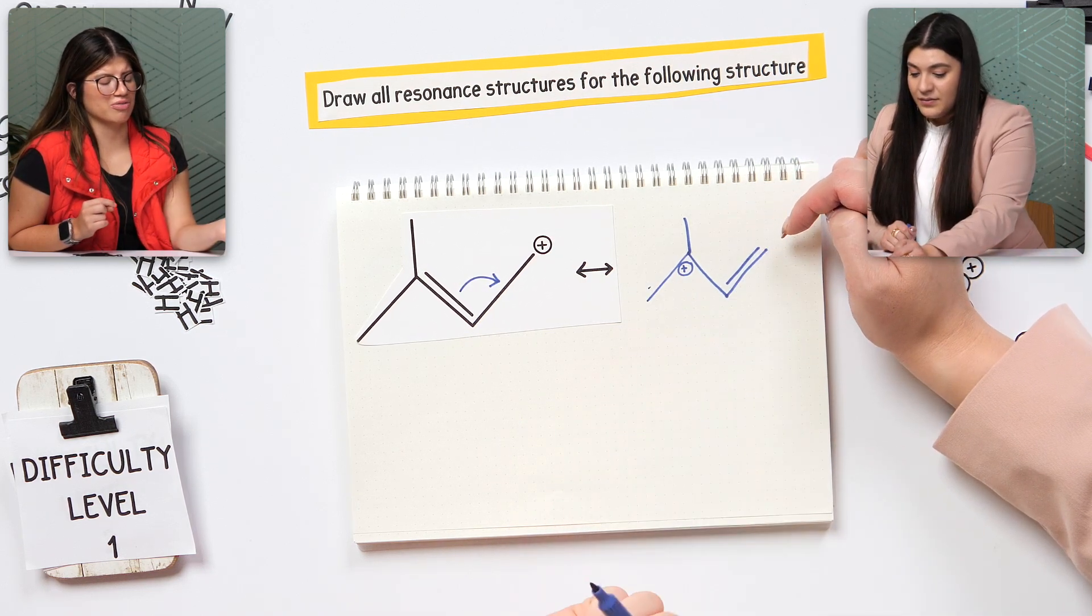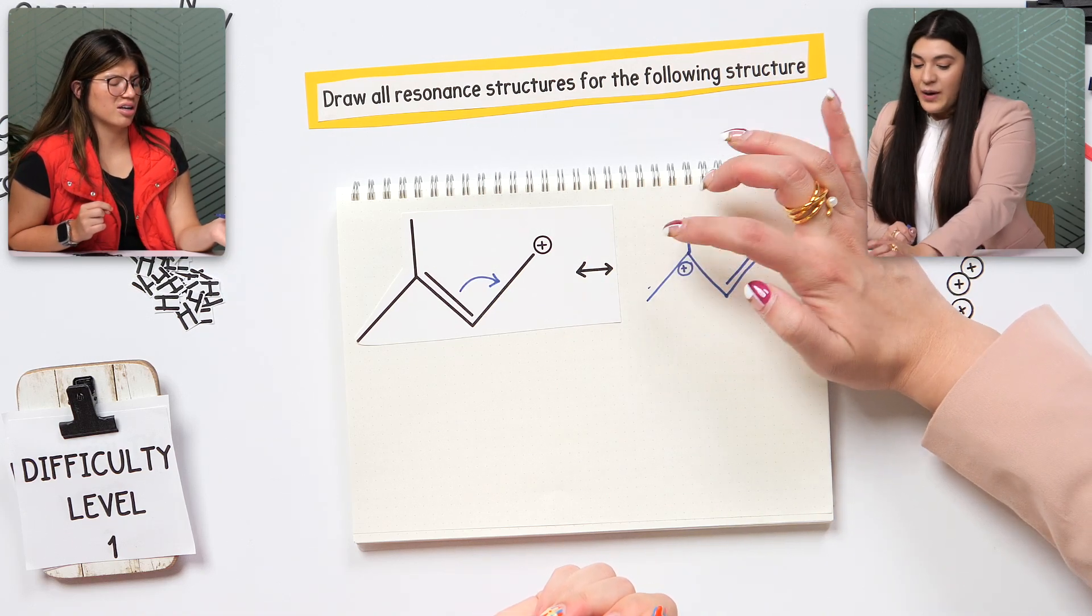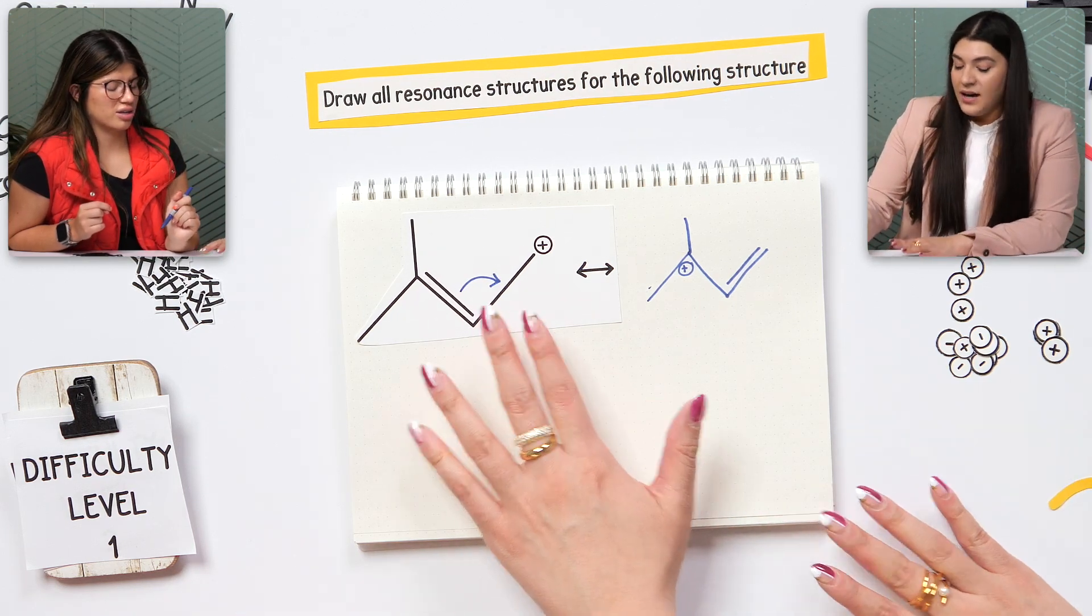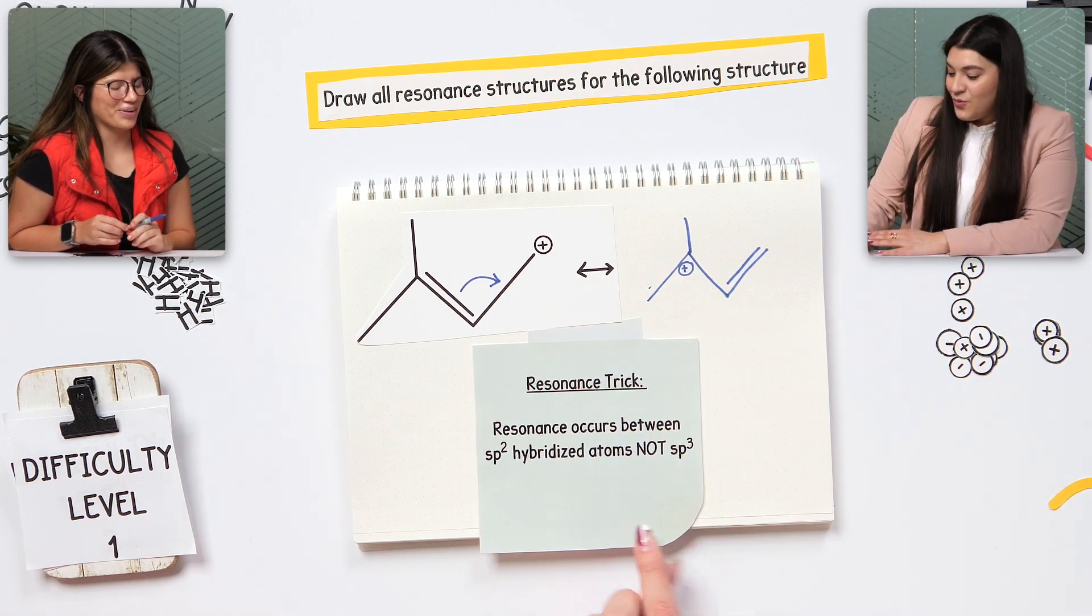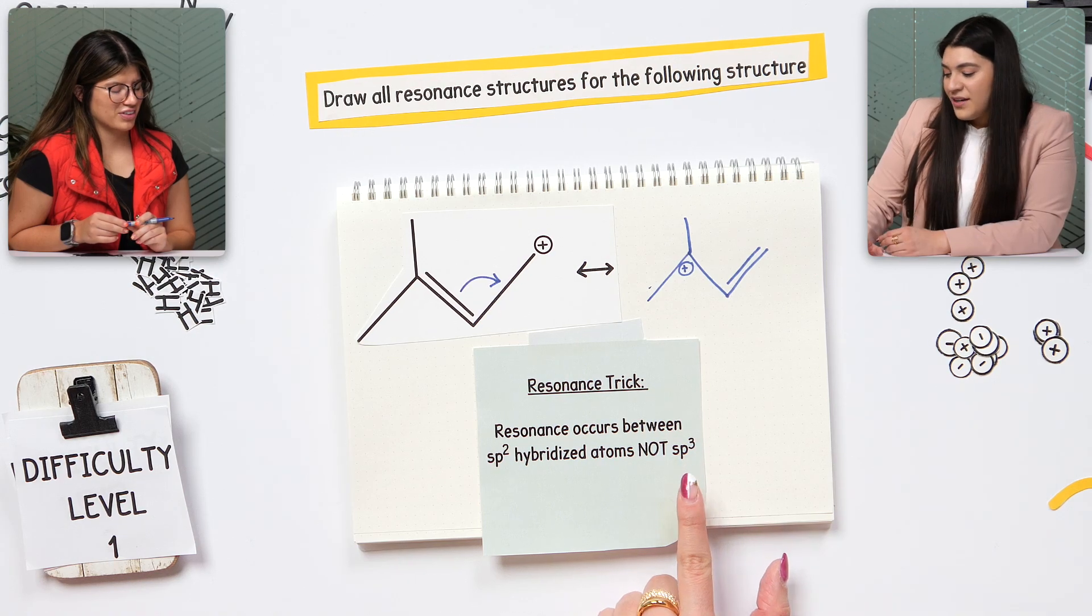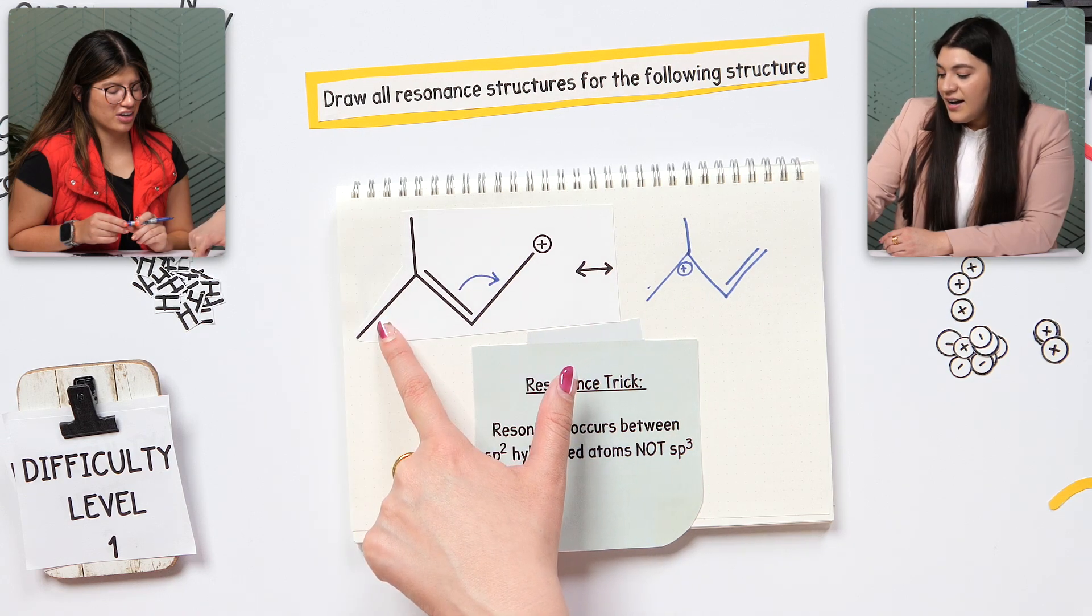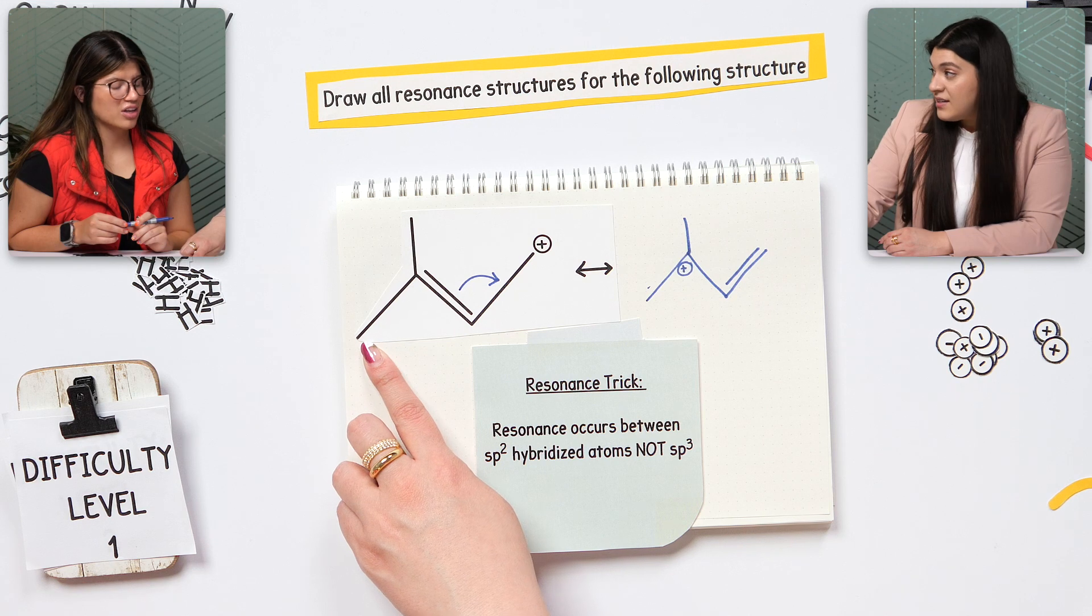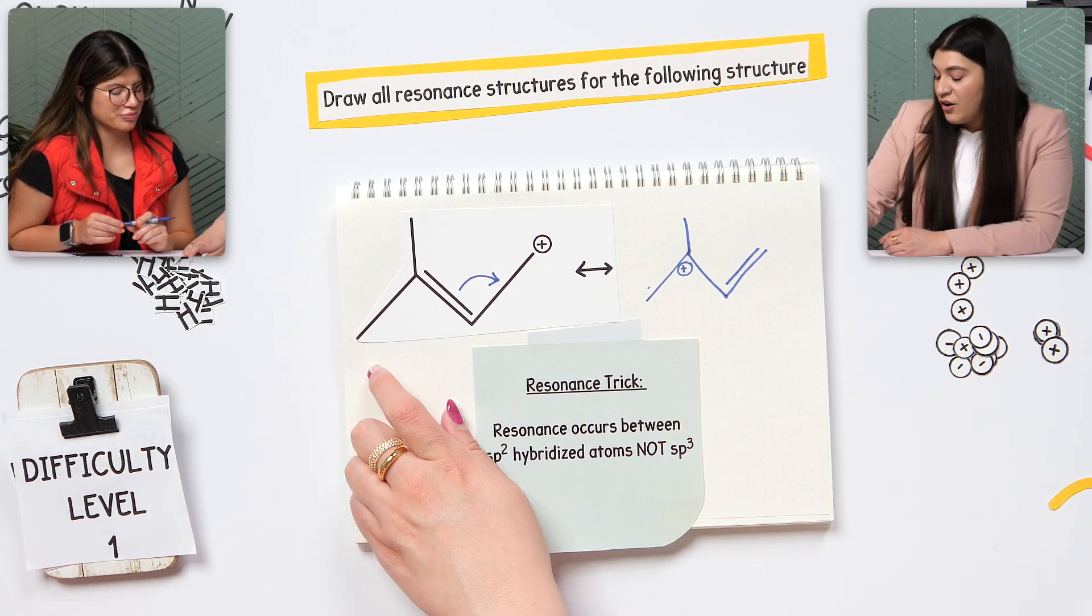But then that would just change the positive back. So the reason why we can't move this to here goes back to the possibilities of resonance. Actually, a resonance trick. We do not involve sp3 hybridized atoms, or think of it as just a single bond. We're not going to move that over here. And I know that this carbon is sp3 hybridized because there are four bonds - there's three hydrogens that aren't being shown.